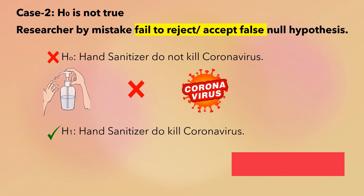Now Case 2 is when H₀ is not true — that means the null hypothesis is not true. If the researcher rejects this null hypothesis, they will accept the correct alternative hypothesis, which is 'hand sanitizer does kill coronavirus.' The researcher has made the correct decision. There is no error.